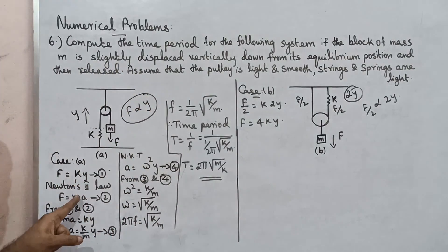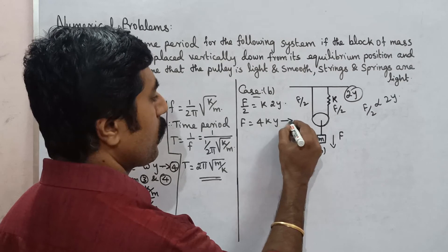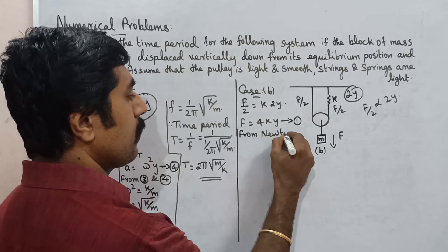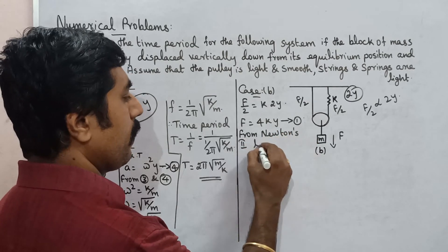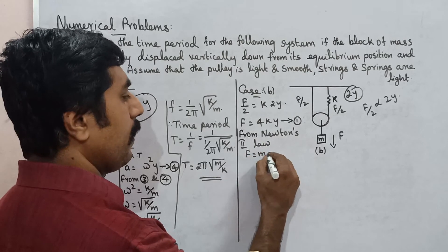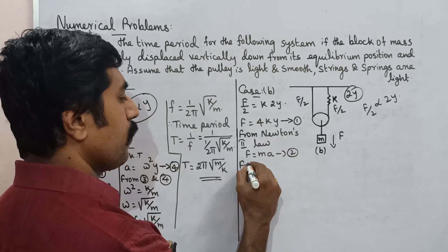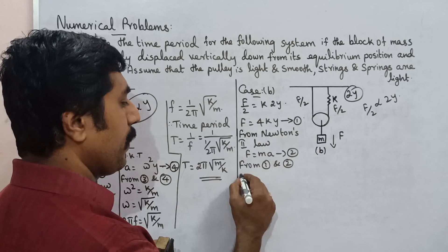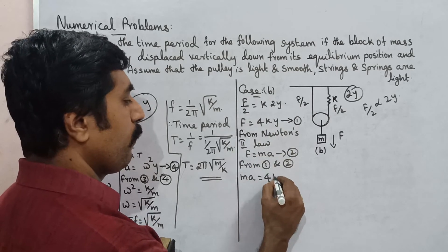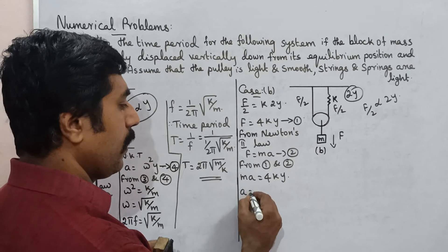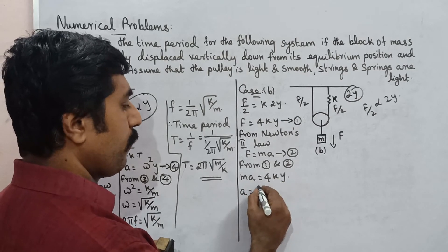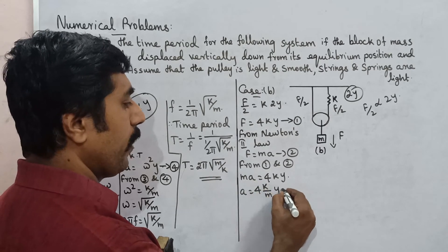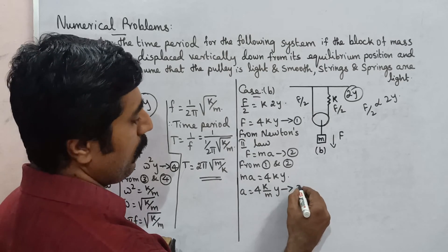Applying Newton's second law for Case B: from equations 1 and 2, the left-hand side equals ma, and the right-hand side gives m times a equals 4ky. Therefore, a equals (4k/m) times y. This is equation number 3.